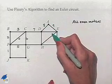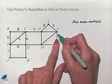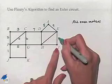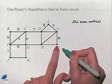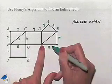At E, I have one, two, three choices, none of which are going to be bridges, so I can move down, and I'm going to go ahead and go to I. Then I have to go over to H, and that's number eleven.